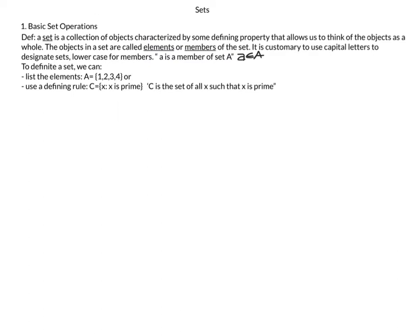We will start with the definition of a set. A set is a collection of objects characterized by some defining property that allows us to think of the objects as a whole. The objects in the set are called elements or members of the set. It is customary to use capital letters to designate sets and lowercase to designate elements. So element a is a member of set A, written with epsilon, which means 'is a member of.'